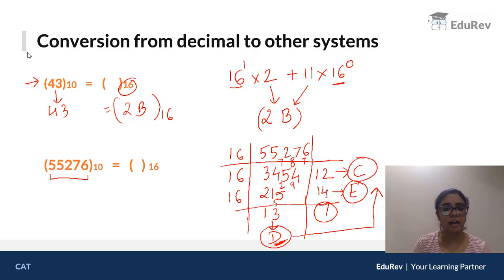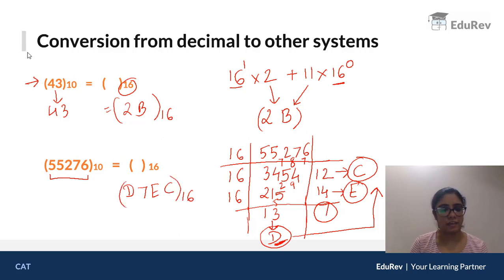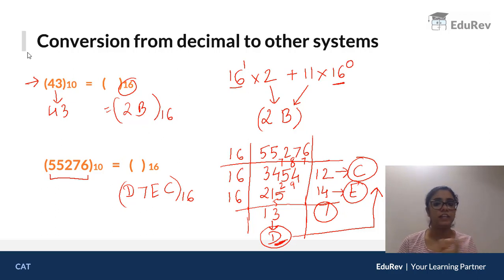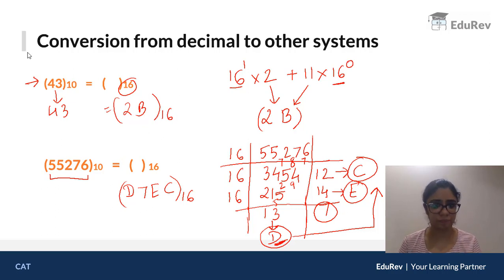So the answer is D7EC to the base 16. This is how you convert a decimal number to a hexadecimal number, using alphabets as necessary.